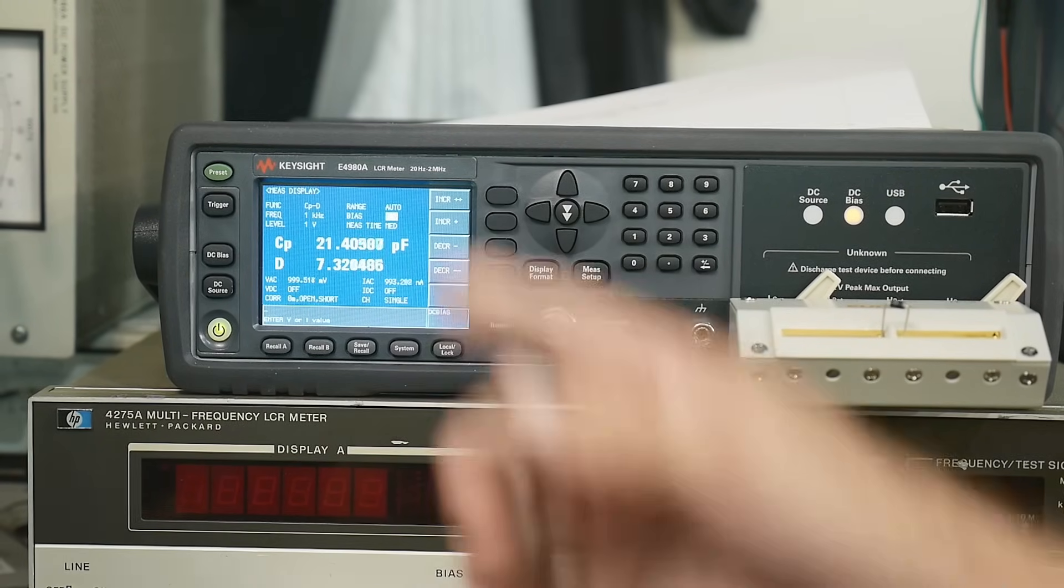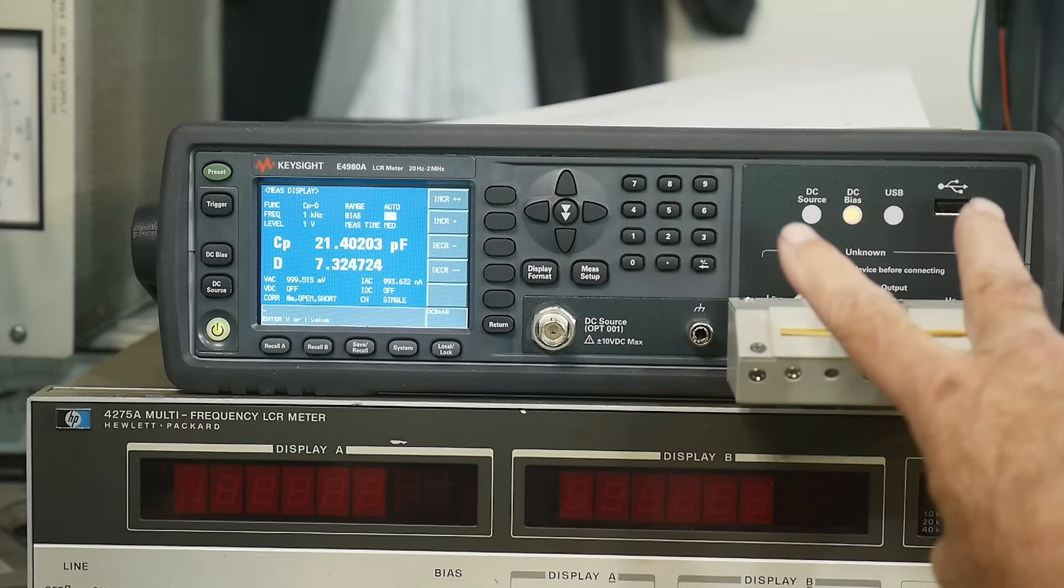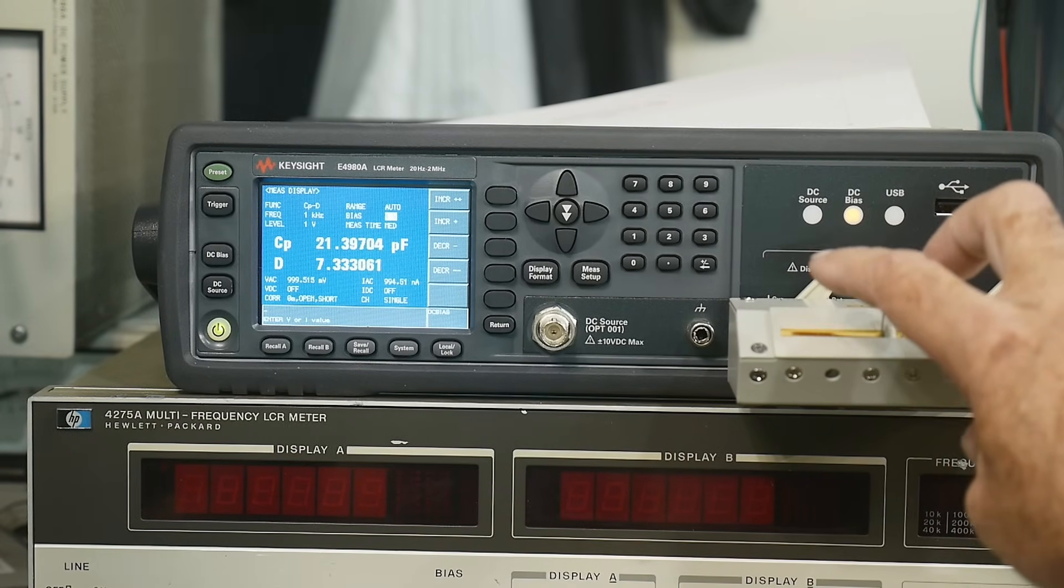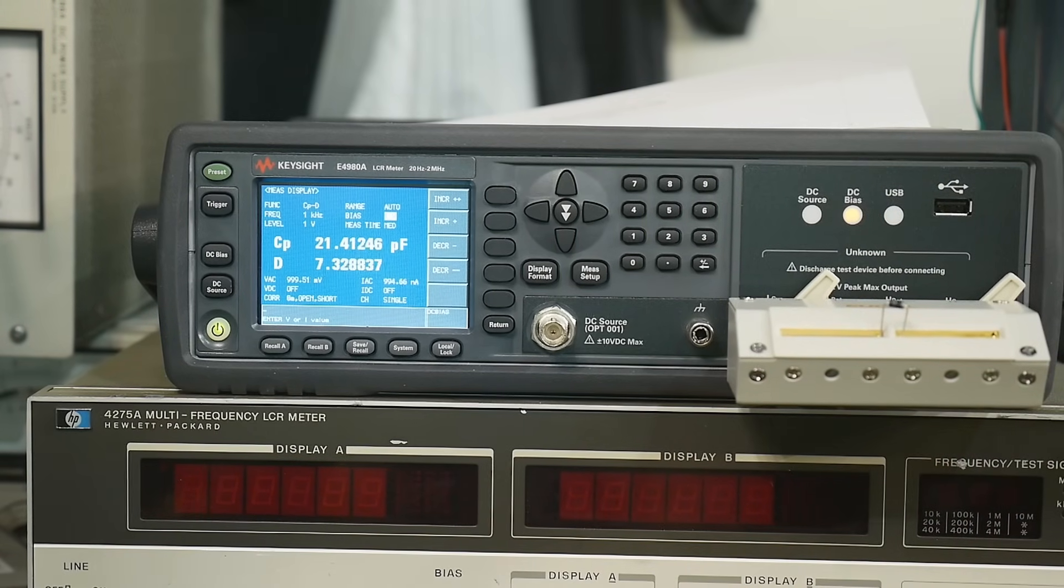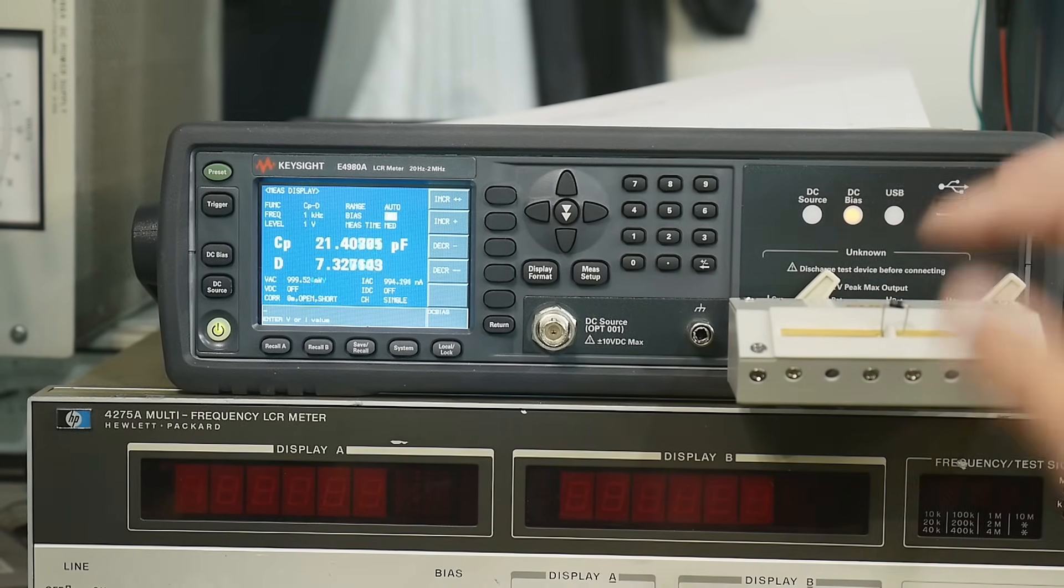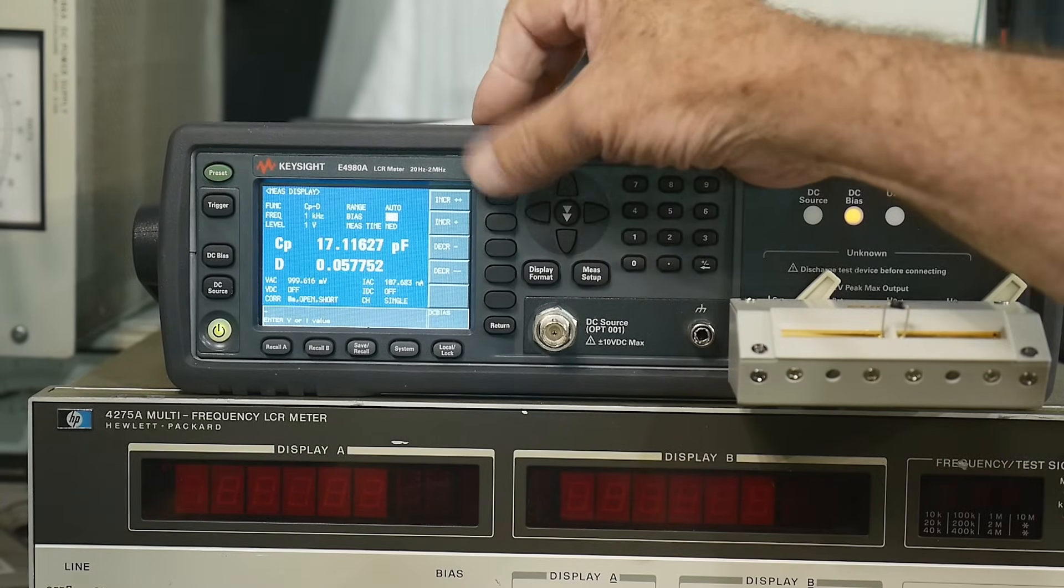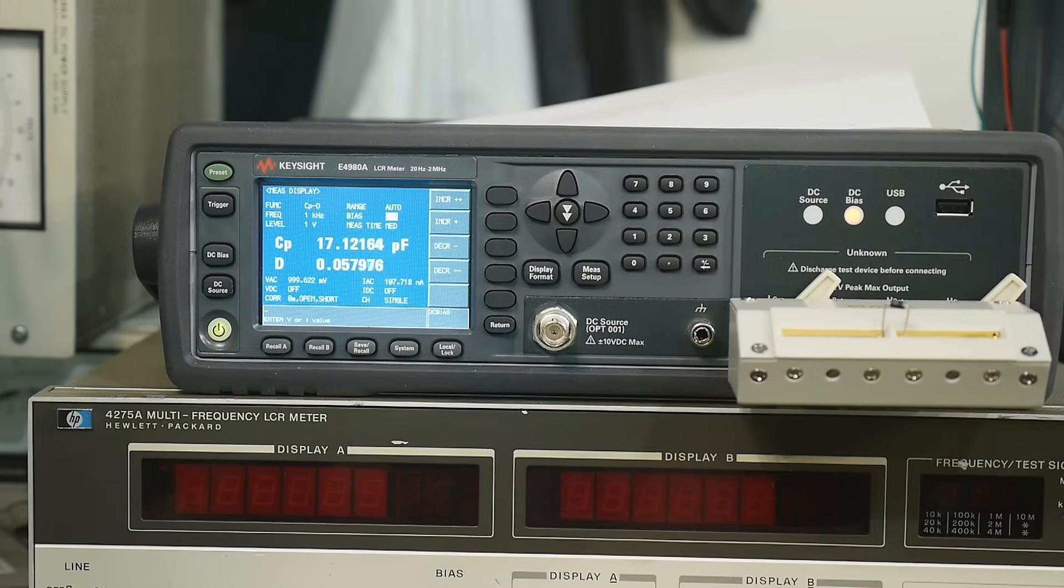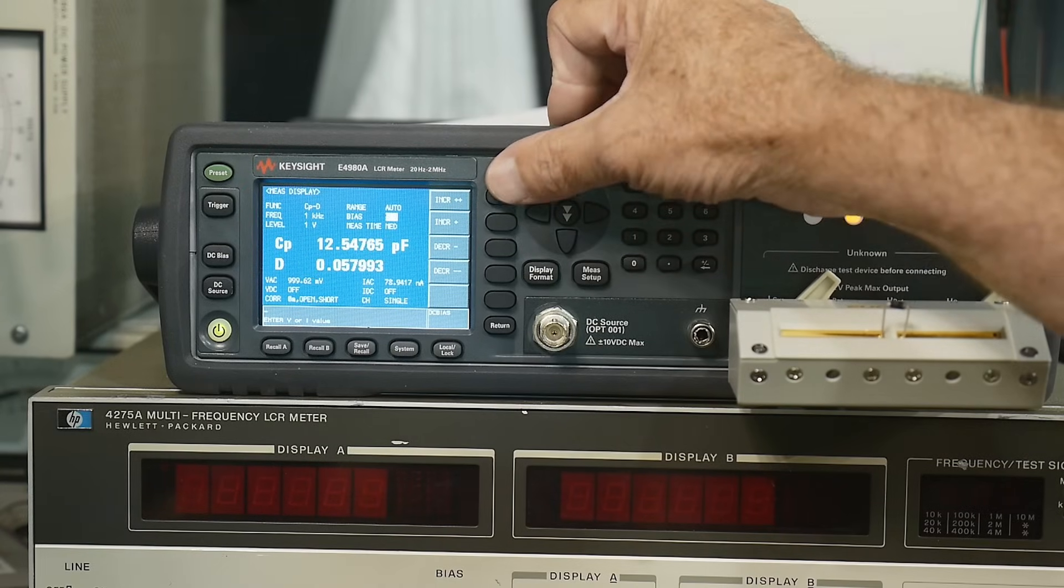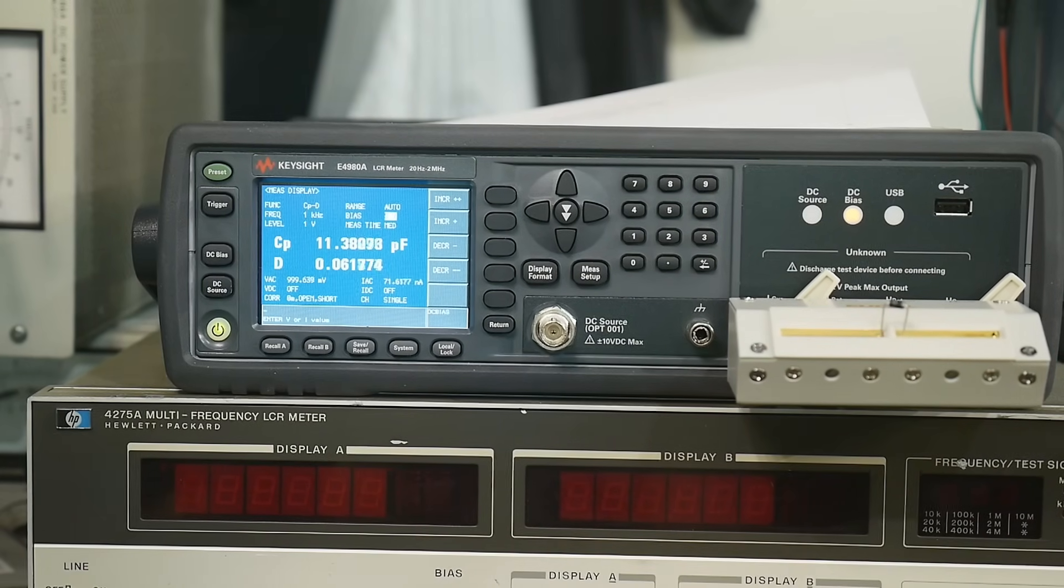So if we change the bias current, right now I'm putting one volt across the diode in the reverse direction. Okay. And you don't want to bias it forward. That wouldn't do any good. You bias it in the reverse direction. If I increase that to two volts, you can see we've dropped. So it's opposite what you think. The more voltage, I'm going up to five volts now. Now we're down to 11 picofarads.